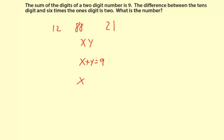And 6 times the 1's digit, that would be 6 times y. So minus 6y, and that equals 2. So the 10's digit minus 6 times the 1's digit is 2. That's what the second equation means.